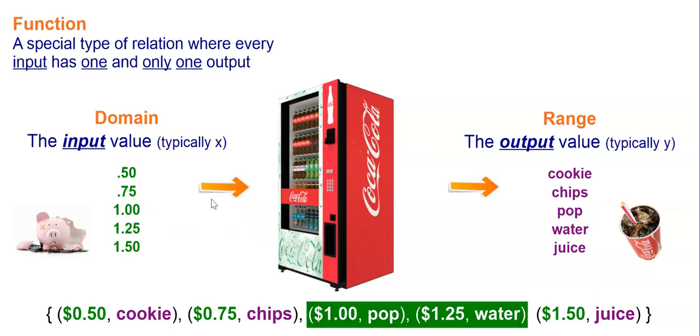So what is an example of a function? Well, if you were to change that $1 for water to $1.25, then this would be a function. Because every input, $0.50, $0.75, $1, $1.25, $1.50, has just one output. A cookie, chips, pop, water, and juice. You're not going to put something into the vending machine and not know what you're going to get out. This would be an example of a function.